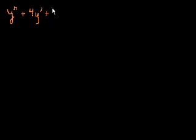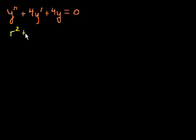Let's say we have the following second order differential equation: the second derivative of y plus 4 times the first derivative plus 4y is equal to 0. We're asked to find the general solution. The first thing we do, like we've done in the last several videos, is get the characteristic equation: r squared plus 4r plus 4 equals 0.